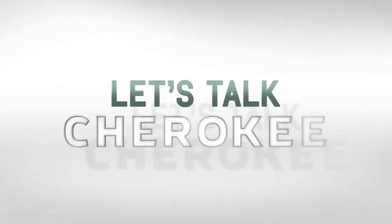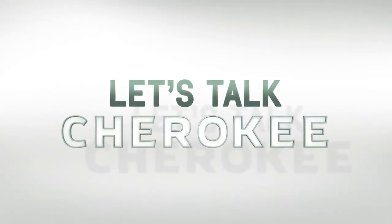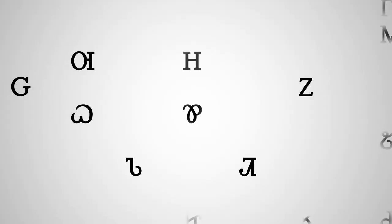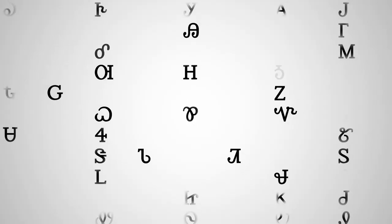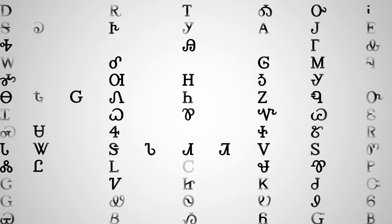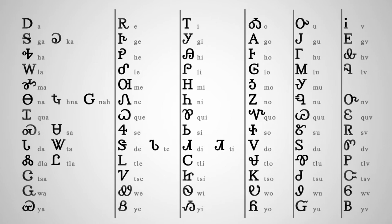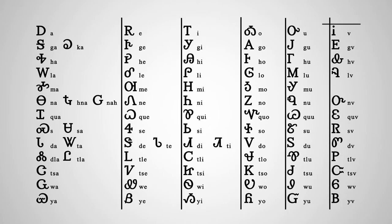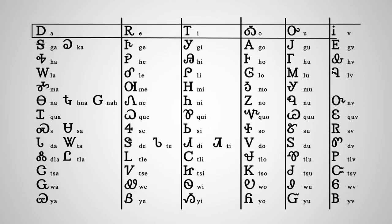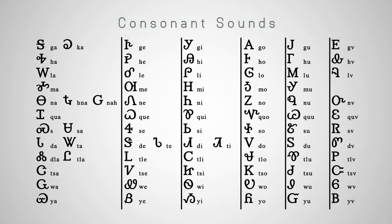Let's talk Cherokee. The Cherokee syllabary is the writing system invented by Sequoia. Each character represents a syllable in the Cherokee language. In this syllabary chart, the top row contains the six vowel sounds. The subsequent rows include the consonant sounds.